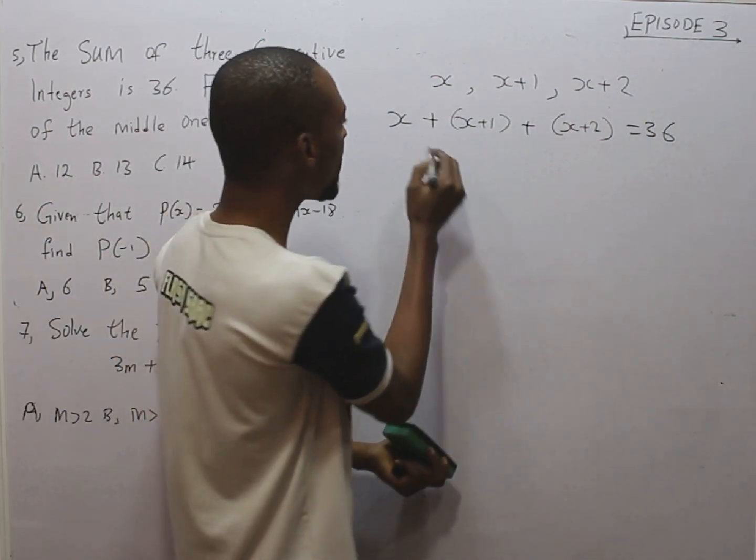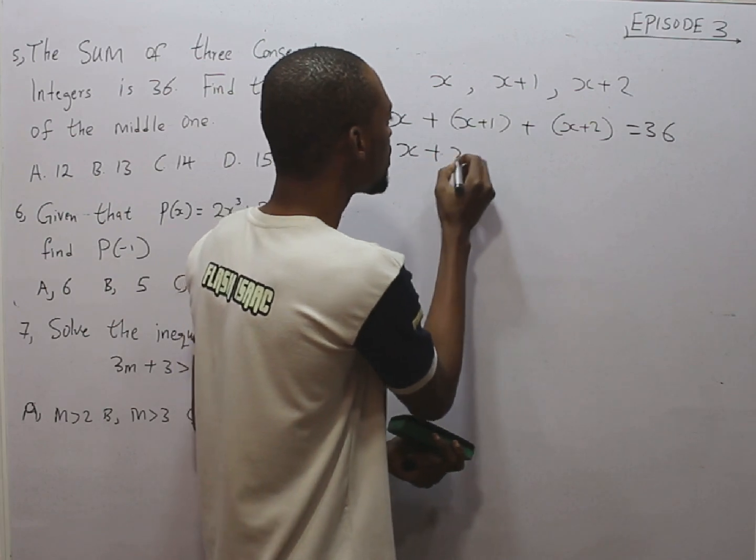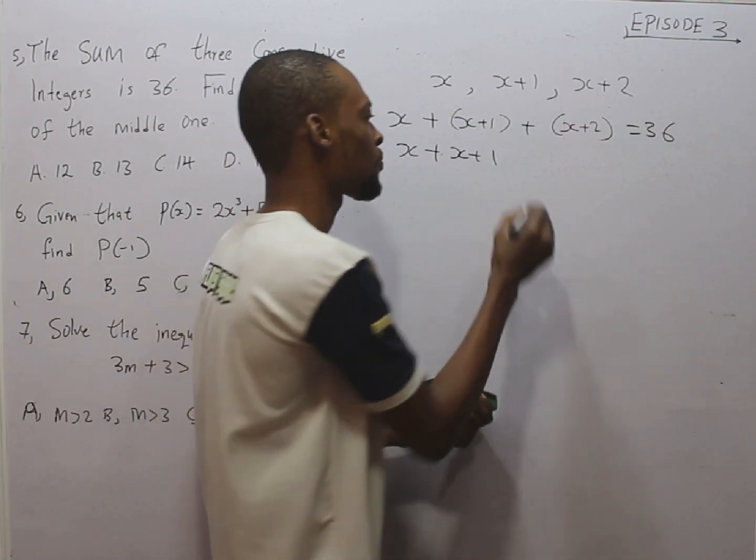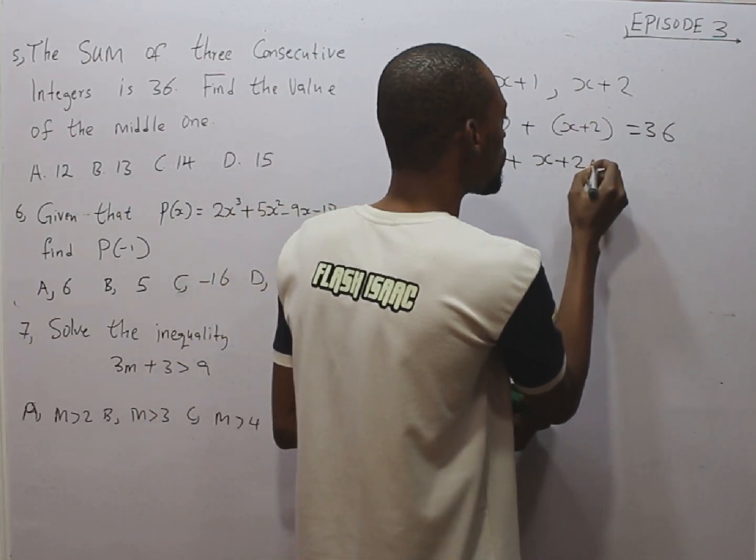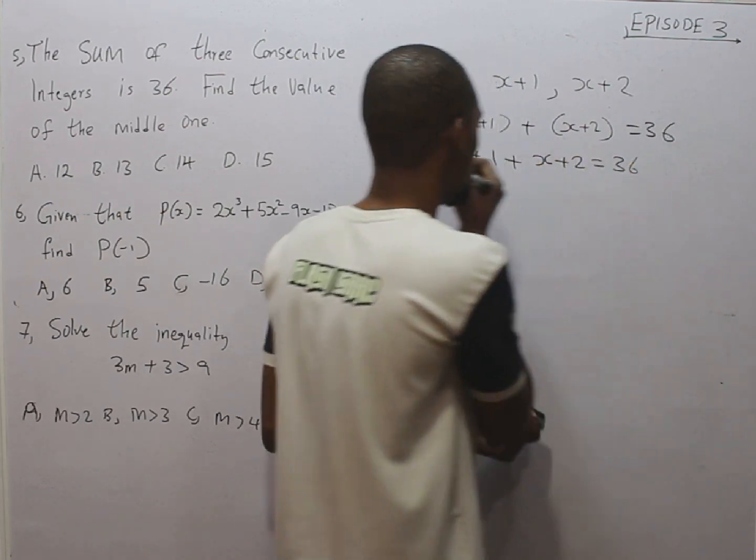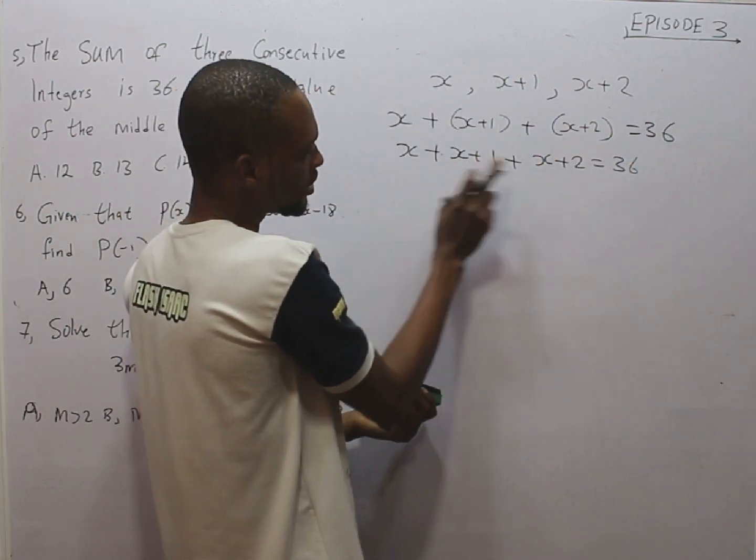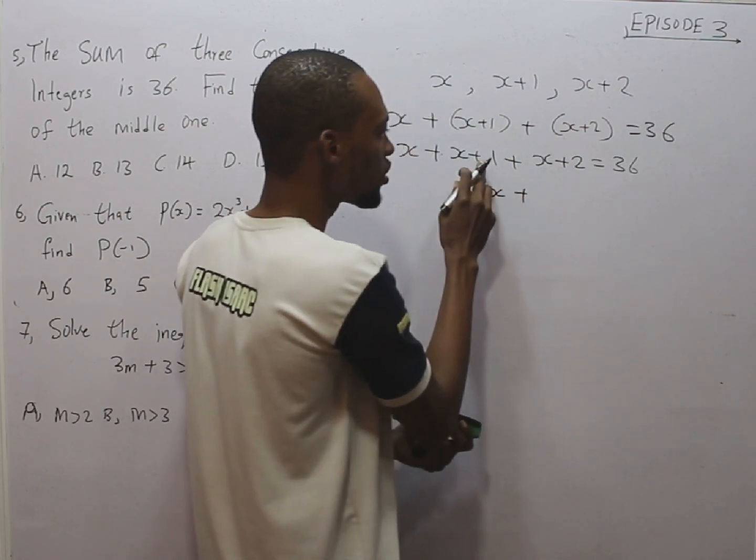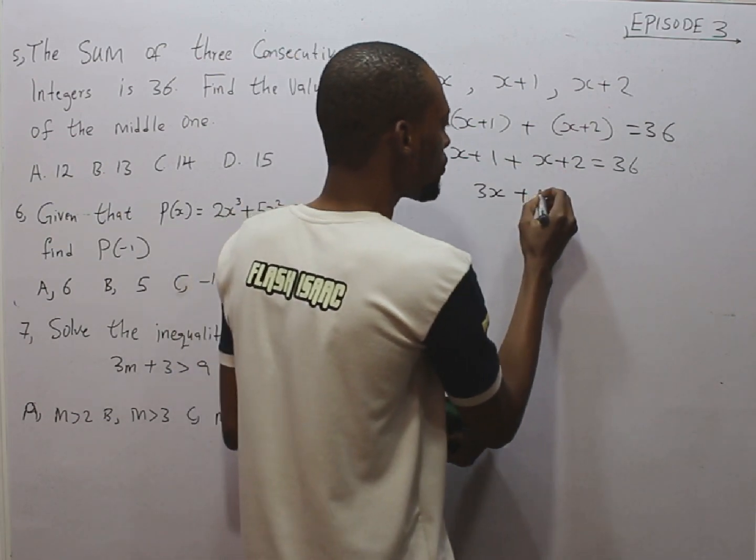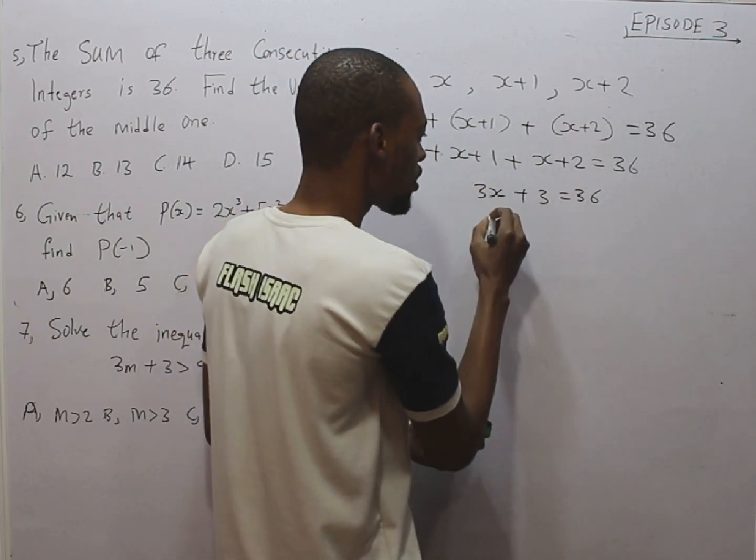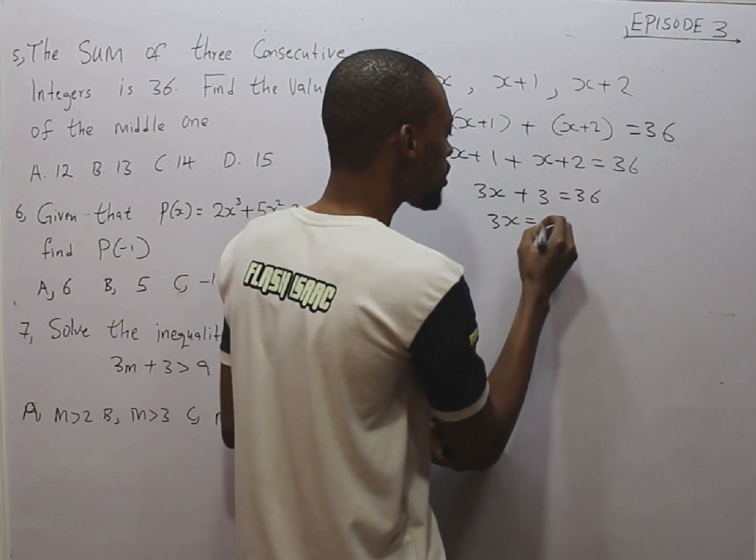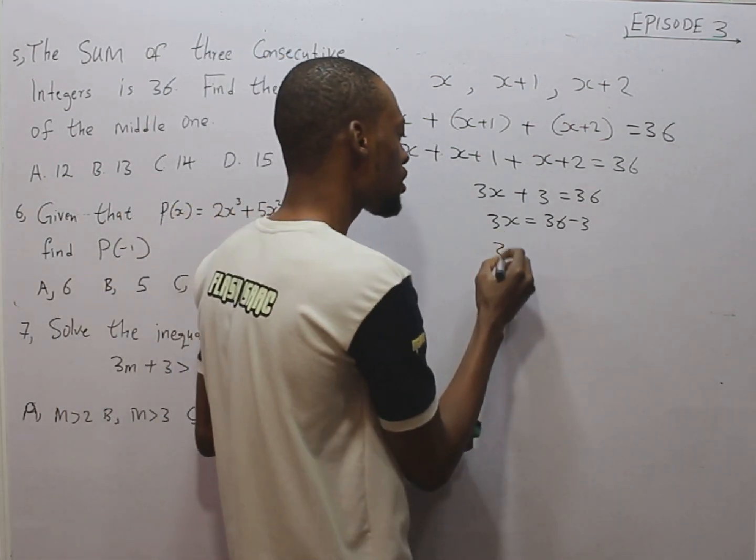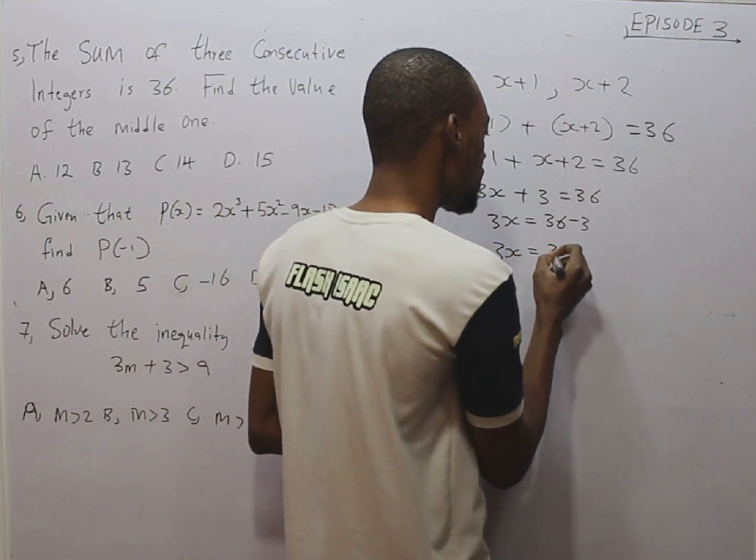If the sum is equal 36, adding, we simply have, this is the same thing as x plus x plus 1. Because using plus to multiply the brackets, it remains the same. Plus x plus 2 is equal 36. x plus x is 2x. Plus x, that is 3x. Plus 1 plus 2 is 3. Plus 3 is equal 36. 3x is equal 36 minus 3. That is, collective like terms. So, 3x is equal 33.